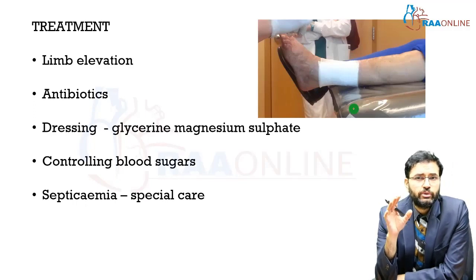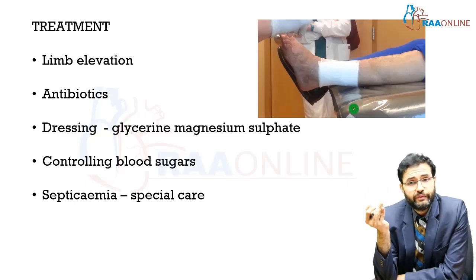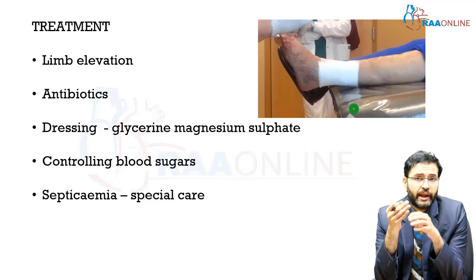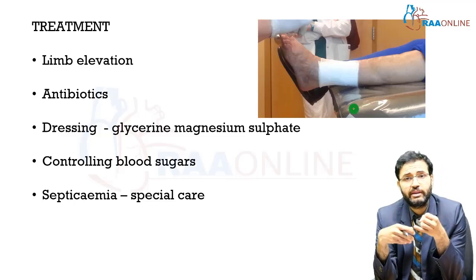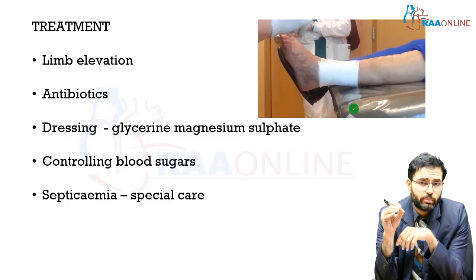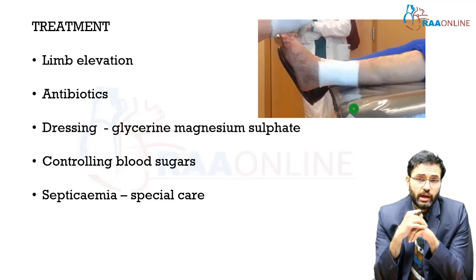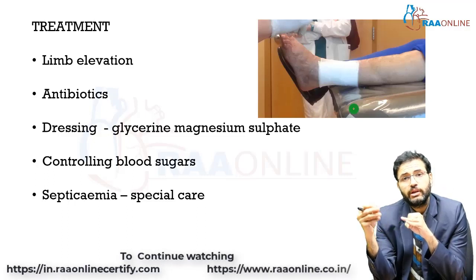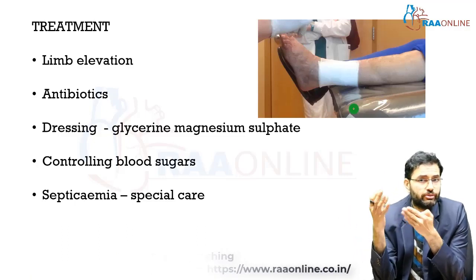Treatment of cellulitis aims to reduce edema, reduce pain, and obliterate the infection. To reduce edema, limb elevation and glycerin magnesium sulfate dressings — which have hygroscopic properties — are used. To eliminate the infection, antibiotics covering gram-positive organisms such as penicillin and cephalosporins are started. Underlying comorbidities must be controlled; for example, blood sugar must be managed in diabetics. If the patient develops septicemia, adequate monitoring and organ support — such as dialysis for renal failure or ventilatory support for respiratory distress — should be provided.